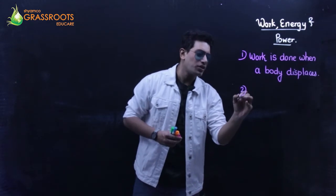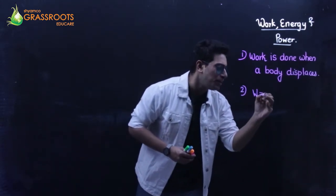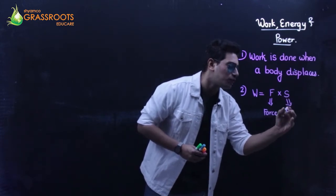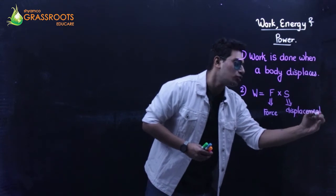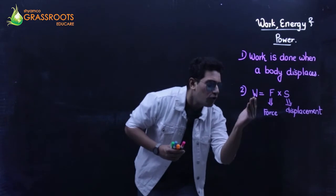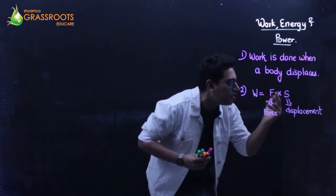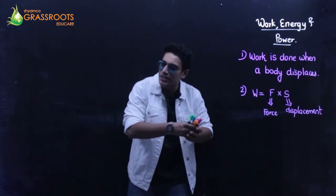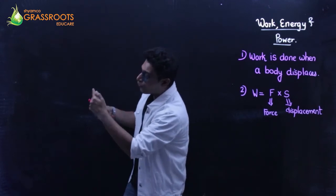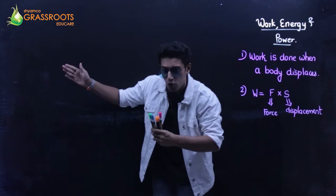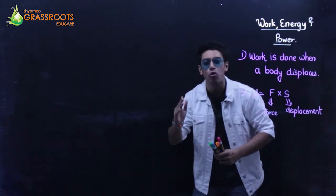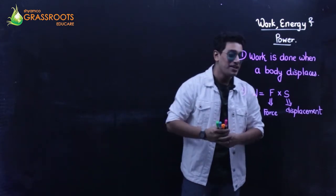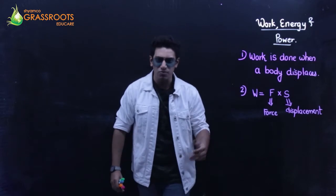Second pointer: Talking about the formula for work. The work has its formula F into S. F stands for force, the magnitude of force, and S stands for the displacement. So, if I happen to define the amount of work done, the amount of work done is equal to the product of the force and the displacement in the direction of the applied force. If I am playing cricket and I hit a ball in that direction, the force in which, the direction in which I apply the force, the displacement of the bat, the displacement of the ball, shall be in the same direction, provided there is no top edge or bottom edge.